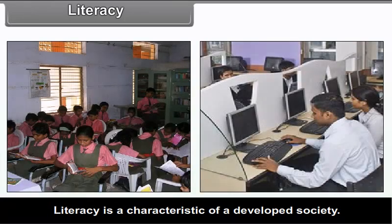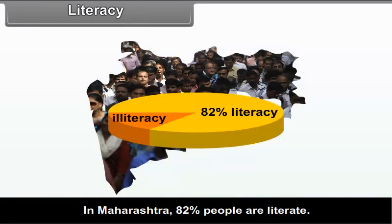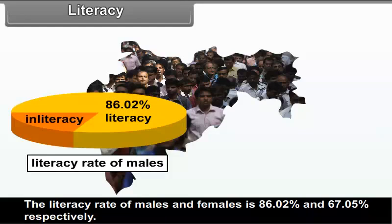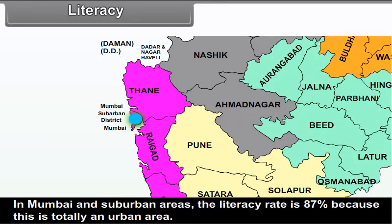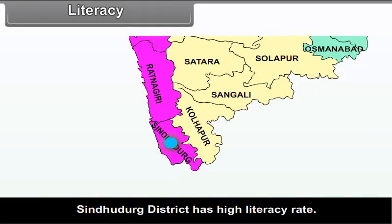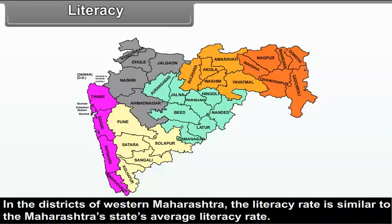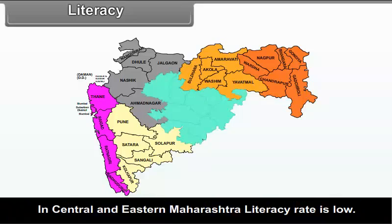7.2.3 Literacy. Literacy is a characteristic of a developed society. In Maharashtra, 82% of people are literate. The literacy rate of males is 86.02% and of females is 67.05%. In Mumbai and suburban areas, the literacy rate is 87% as it is a totally urban area. Sindhudurg district has a high literacy rate. In western Maharashtra, the literacy rate is similar to the state average. In central and eastern Maharashtra, the literacy rate is low. Chandrapur, Gadchiroli, and Nandurbar districts have low literacy rates due to a relatively higher scheduled tribal population.